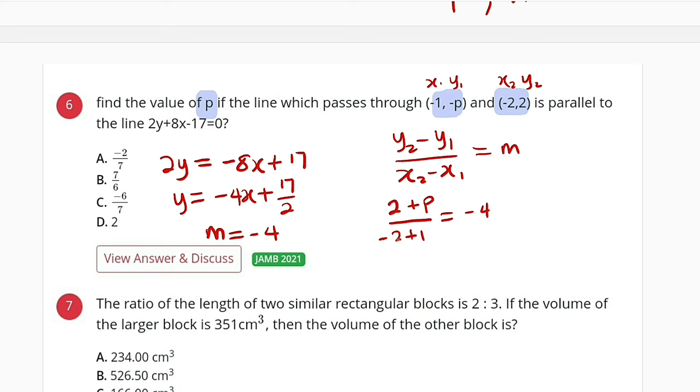To the bottom, we have negative 2 plus 1, which is negative 1. And we can cross multiply with this negative 4. Negative 1 times negative 4 is positive 4. Therefore, we can write this as 2 plus p equal to 4.